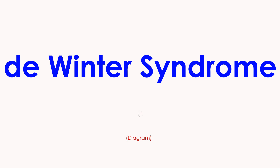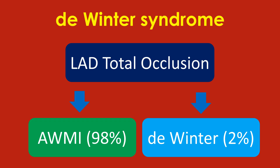DeWinter syndrome was described as a new ECG sign of total occlusion of proximal left anterior descending coronary artery in 2008 by Robert J. DeWinter and colleagues. An ECG with typical features showing upsloping ST segment depression in anterior leads with tall symmetric T waves, instead of the ST segment elevation typical of anterior infarction due to total occlusion of the LAD — DeWinter and associates described this as anterior ST segment depression.